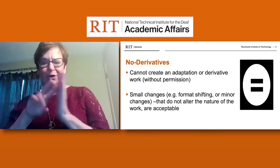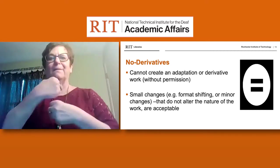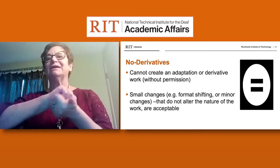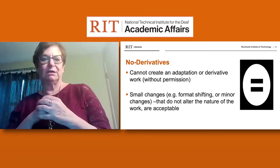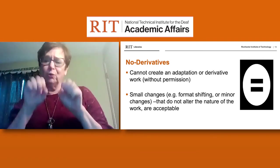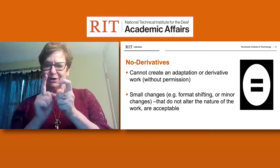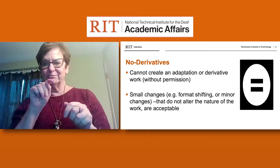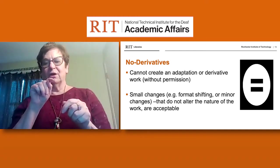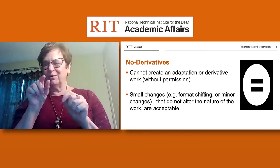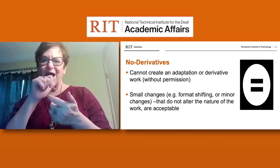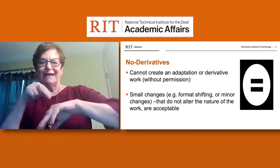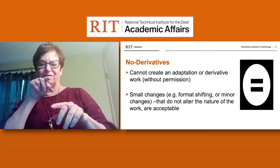Another element is the equal sign symbol, which means no derivatives — you cannot create an adaptation without permission. It is permissible to make small changes like changing formatting or fixing minor spelling errors, but you can't do anything that would actually alter the nature of the work.